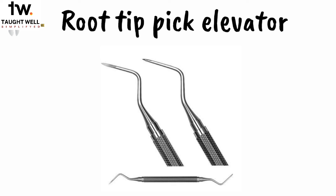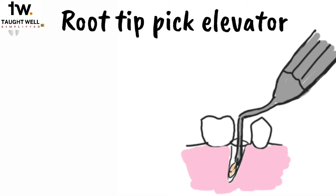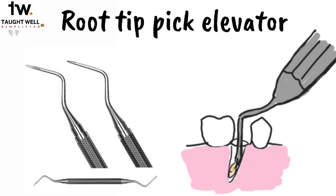The second type of pick is the root tip pick elevator. They have two angles, making them double-angled elevators. You can see how they have a delicate and sharp tip. Using this elevator, we can remove small root tips from the socket. However, since the tip is very fine, we should not use this elevator with the wheel-and-axle or lever principle, because it can break the tip. It's only used to tease very small root tips by inserting the tip into the periodontal ligament space between the root tip and the socket wall.